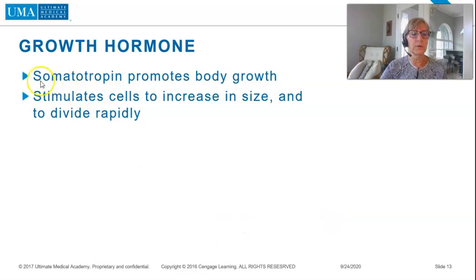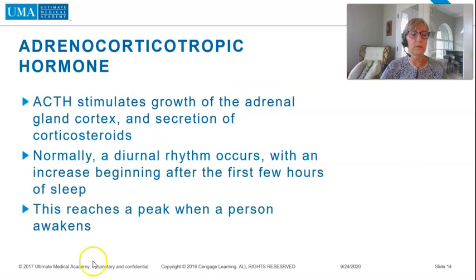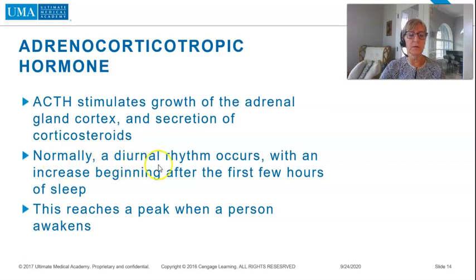Growth hormone, or somatotropin, promotes body growth, stimulates cells to increase in size, and to divide rapidly. Adrenocorticotropic hormone, ACTH, stimulates growth of the adrenal gland cortex and secretion of corticosteroids. Normally a diurnal rhythm occurs with an increase beginning after the first few hours of sleep, reaching a peak when a person awakens.